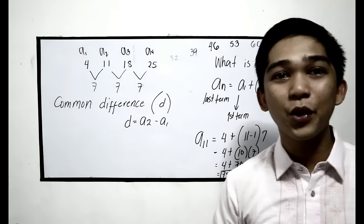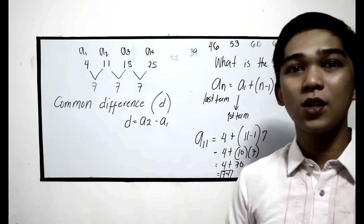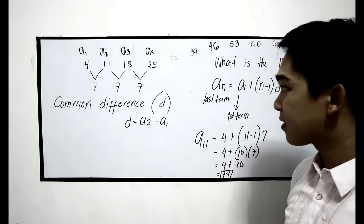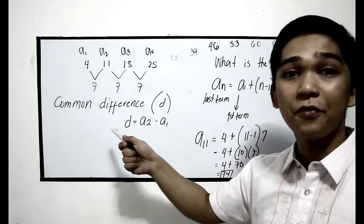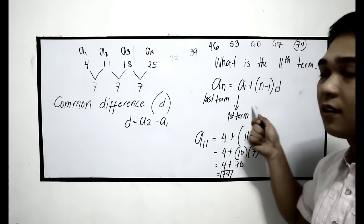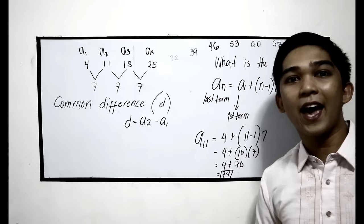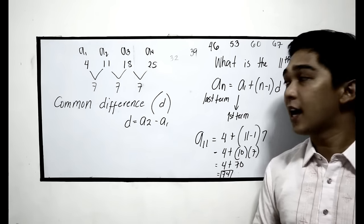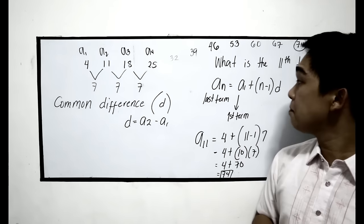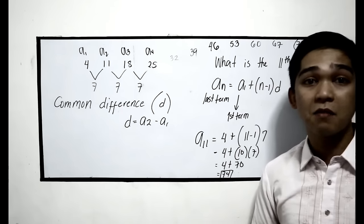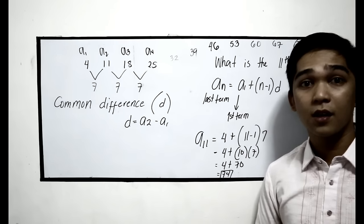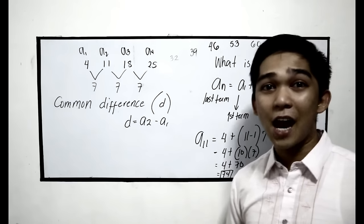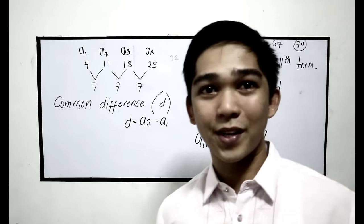So we now have two different formulas: the common difference formula and the nth term formula. An is equal to a1 plus n minus 1 times the common difference. That is the arithmetic sequence.